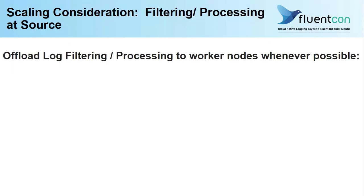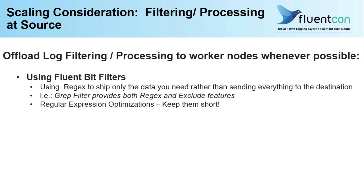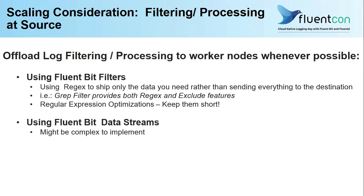Another thing to consider: whenever possible, you need to offload your workload to the source and apply filtering. You can use Fluentbit filters. In a successful log delivery pipeline, you should only ship logs or information data that really adds value for your business — there is no point streaming a log that doesn't have any business value. Fluentbit also has a data stream feature which can be used to filter and process your data and logs at source.